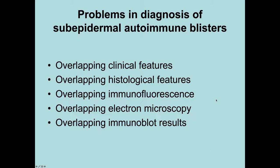The problems we face in the diagnosis of subepidermal blisters are that everything overlaps — the clinical features, the histology, the immunofluorescence findings, the electron microscopy findings, and even immunoblotting sometimes overlaps. To make a diagnosis of a subepidermal autoimmune blistering disorder, we really have to take as many of these features as possible together in hopes of reaching a definitive diagnosis.